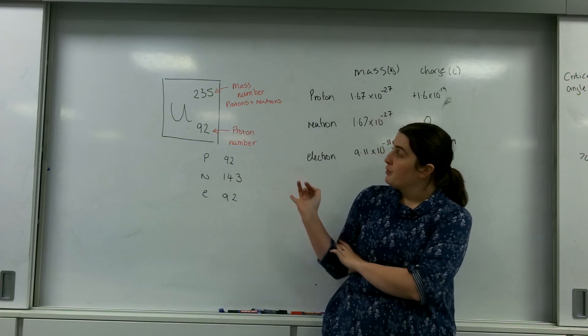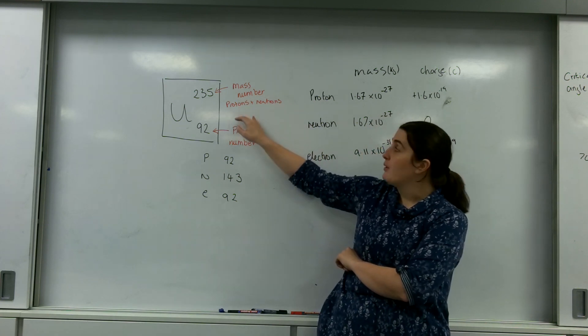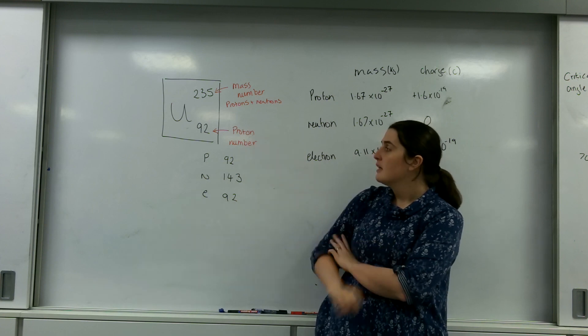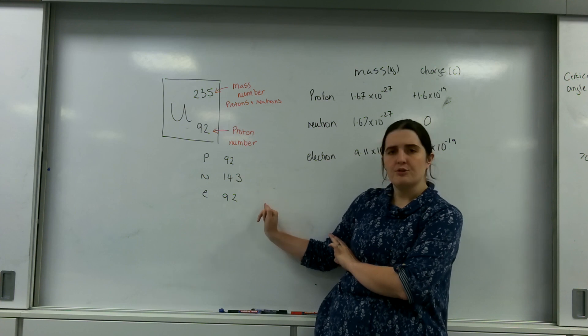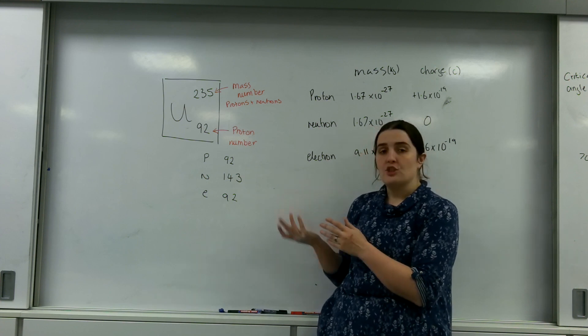So uranium-235, that's its mass number, that's how many protons and neutrons it has. This is how many protons it has: 92 protons, 143 neutrons, and electrons at the moment has 92.